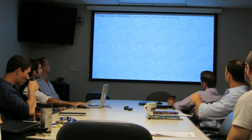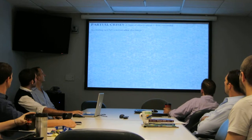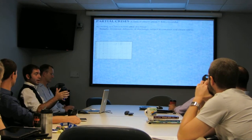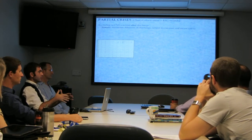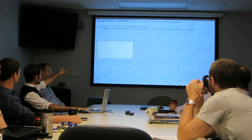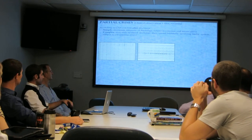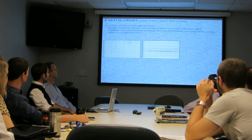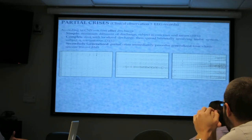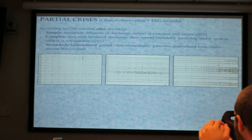The big classification of seizure crises is partial and generalized. Partial crises are classified according to the patient's reaction after the seizure. A simple partial crisis is a simple diffusion that doesn't affect consciousness — the patient is totally aware and awake, as shown in the EEG on the left. A complex partial crisis departs from a specific locus, spreads bilaterally, and involves loss of consciousness. We also have secondary generalization, where a simple partial crisis ends up in a generalized tonic-clonic grand mal seizure, shown on the right.